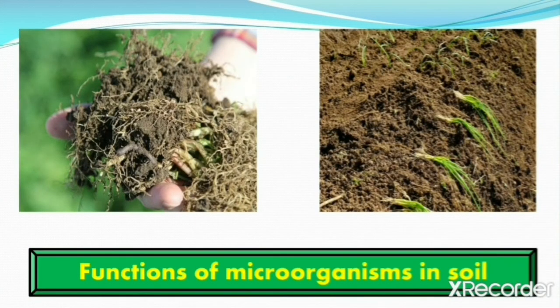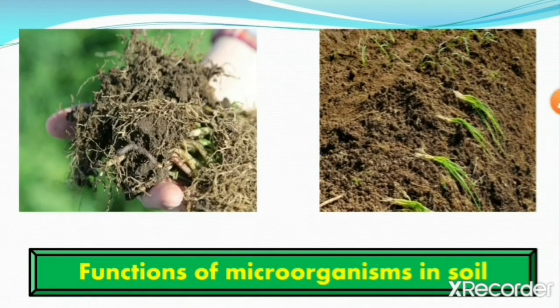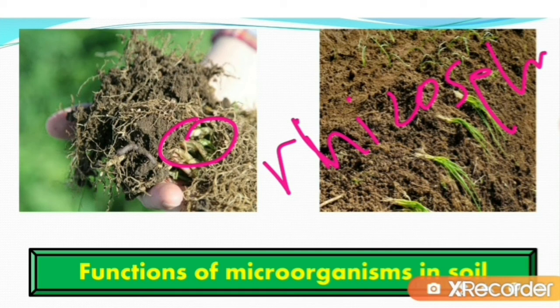Moving to the functions of microorganisms in soil — maximum microbial growth and activity in the soil is found around the roots of plants. This reaction is called the rhizosphere reaction. Particularly, all ecological interactions such as symbiosis, entropism, synergism, commensalism, and antagonism between plants and microorganisms, and among different microorganisms, are found in this region.